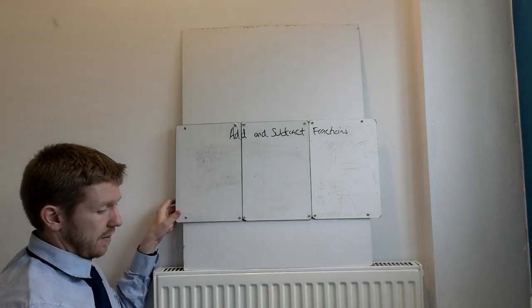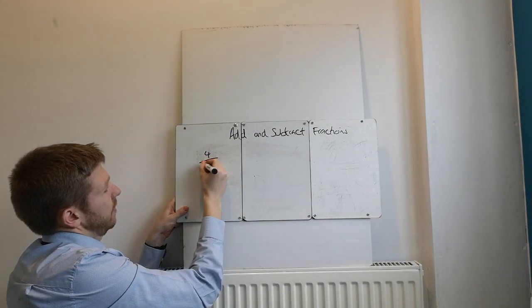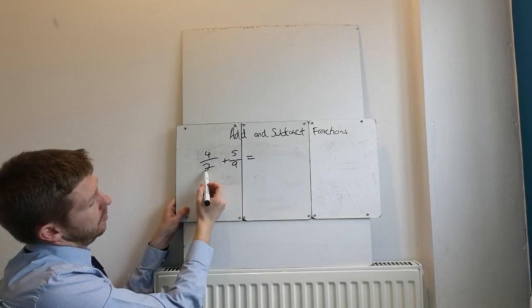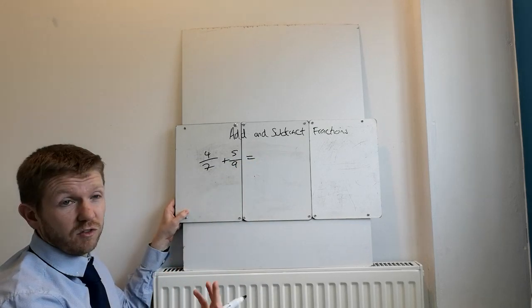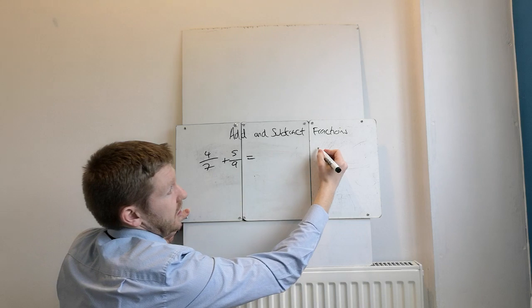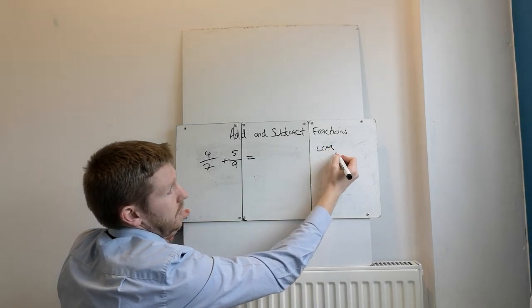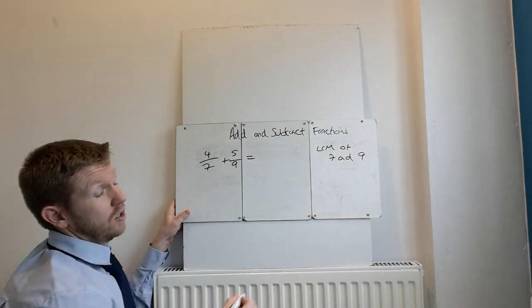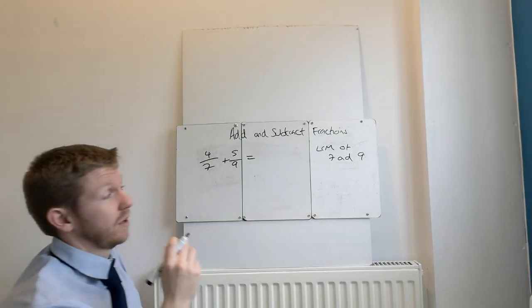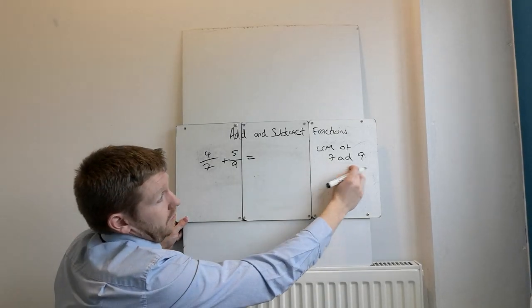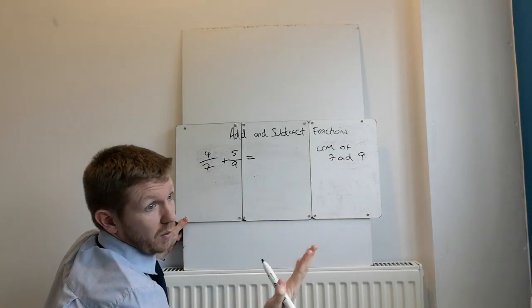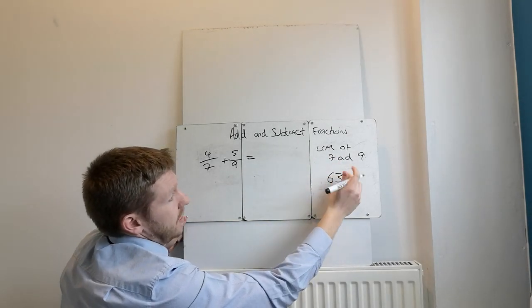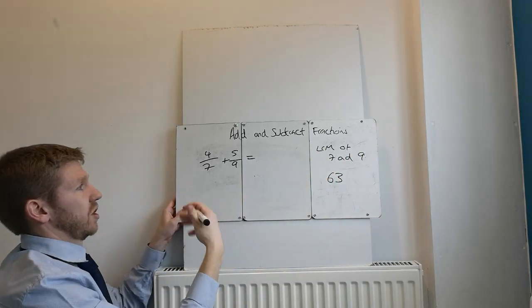So for instance, let's do 4 sevenths plus 5 ninths. So look at this denominator and this denominator. 7 and 9 are different. What you want to be thinking about is the lowest common multiple of 7 and 9. Alternatively, you could just find any multiple of 7 and 9. I was going to go 7, 14, 21, 28, 35, 42 and so on. You end up with 63 and obviously 7 times 9 is 63.